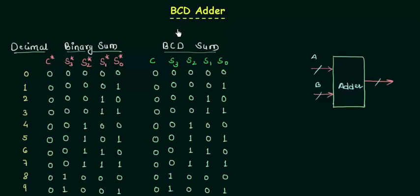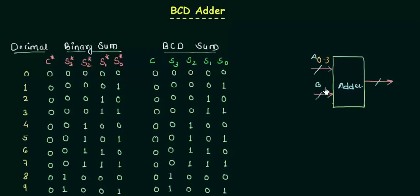In this presentation, we are going to study something very important called the BCD adder, where BCD stands for Binary Coded Decimal. We are having two numbers A and B, and both are 4-bit numbers. We write A0 to A3 and B0 to B3, representing a 4-bit number.